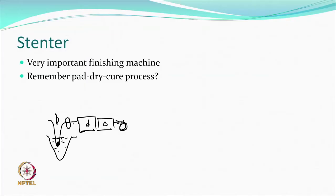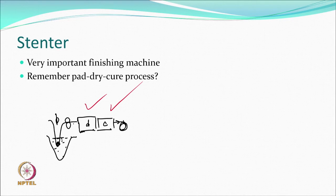The stenter is the most important machine in the finishing system. In the pad-dry-cure process, drying and curing take place in the stenter — not in a cylinder dryer or festoon dryer. When doing resin finishing or flame retardancy treatment, this is the machine used. It is a very large machine serving many purposes.